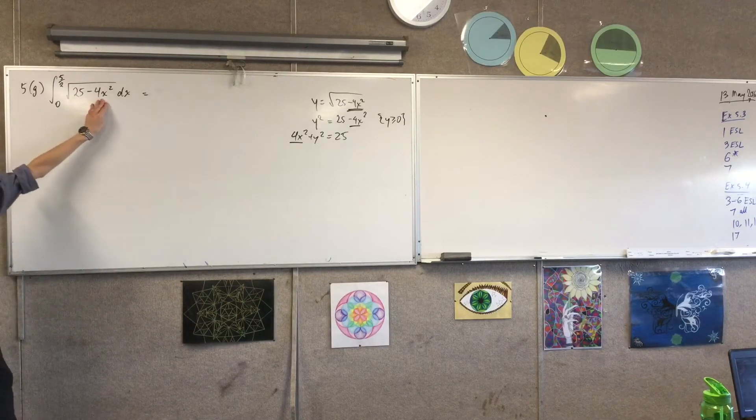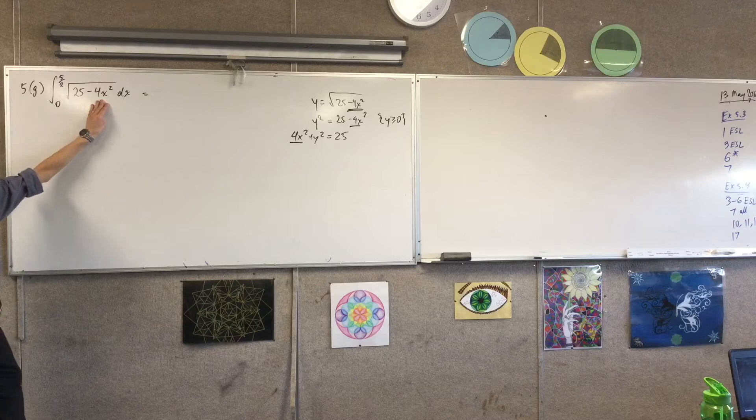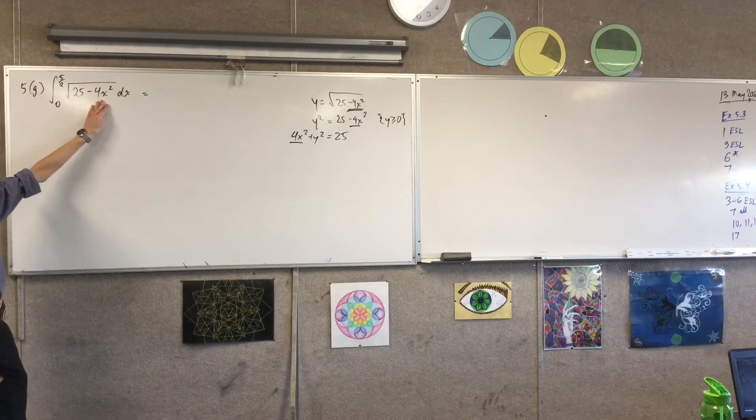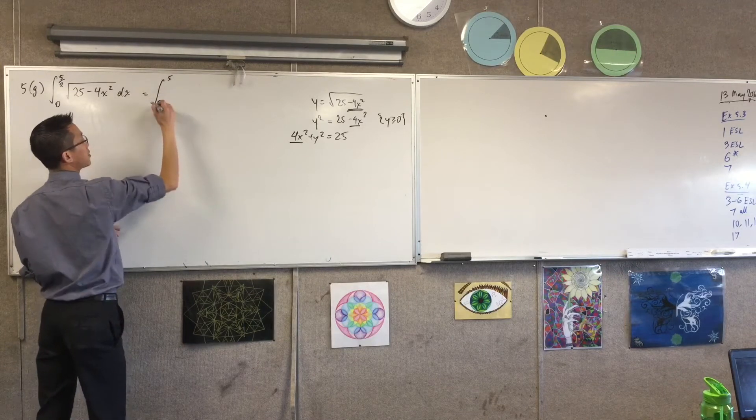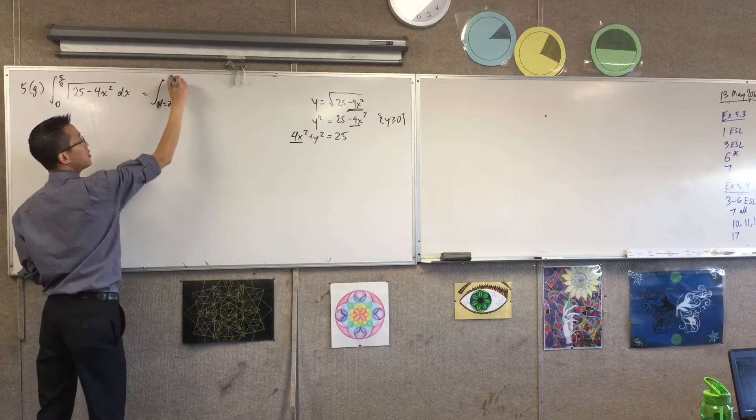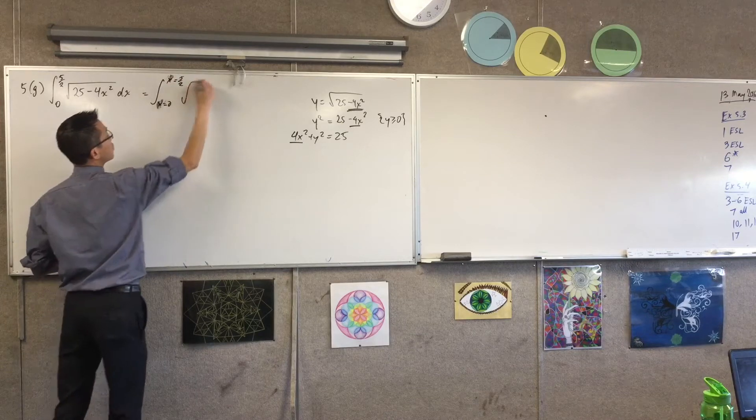So therefore, what I really want is rather than a multiple of some square, I just want it to be a square. Okay, so I'm going to write it like this. I'm going to say, because I'm about to do a substitution, x equals 0 and x equals 5 on 2.